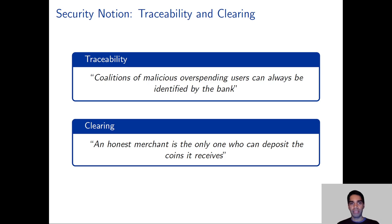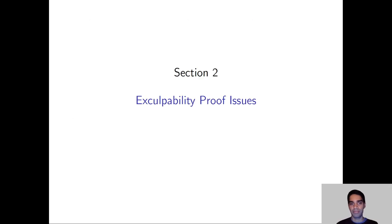Finally, we have the notions of traceability and clearing. Traceability ensures that double spenders can always be identified, whereas clearing ensures that an honest merchant is the only person who can deposit the coins it receives.